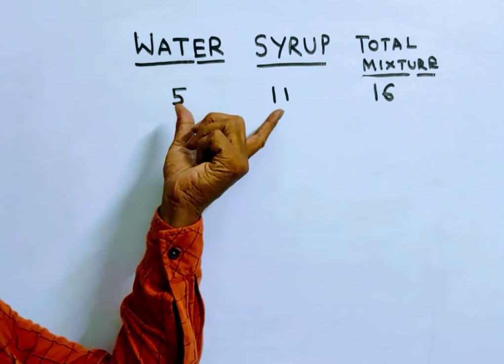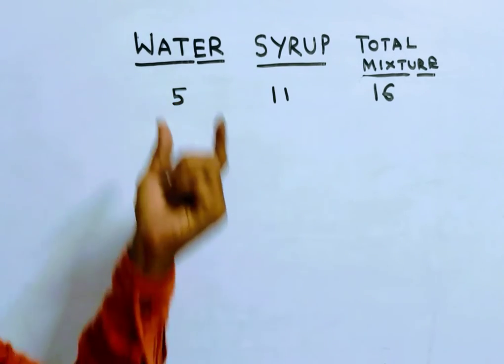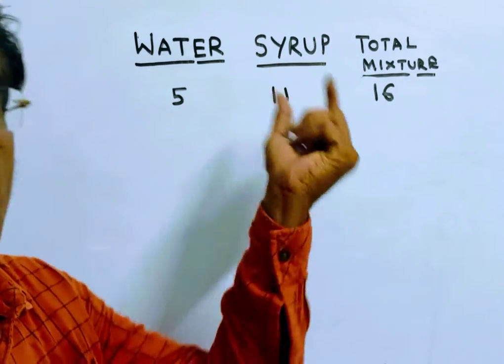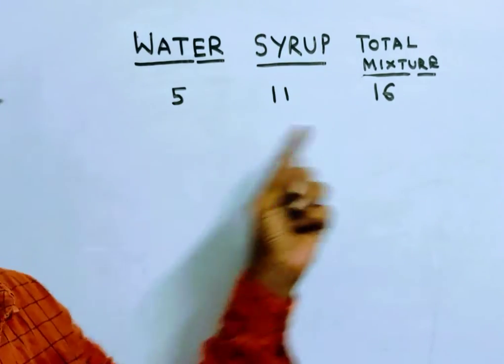If x liters of mixture is drawn, how much water comes out and how much syrup comes out? Water and syrup come out in the ratio 5 is to 11.